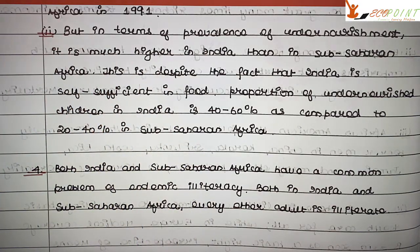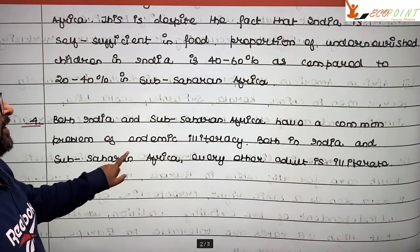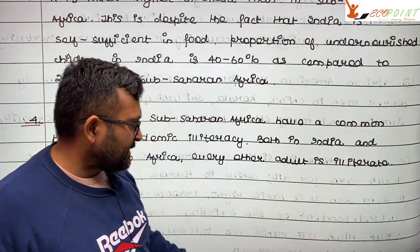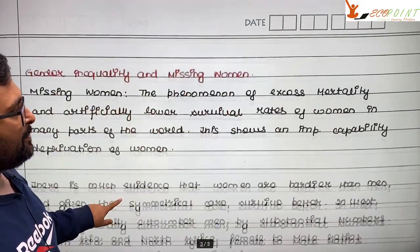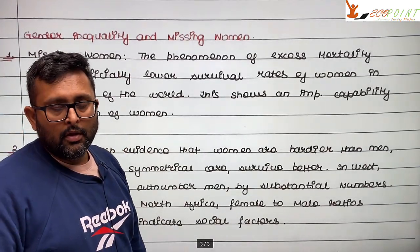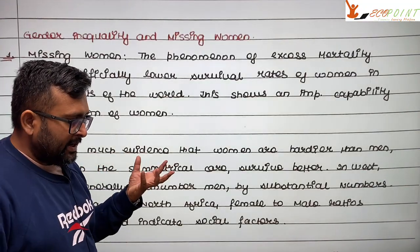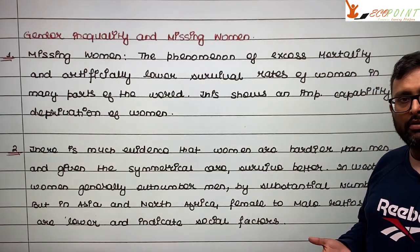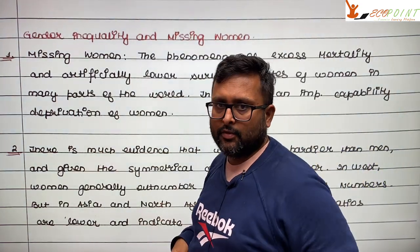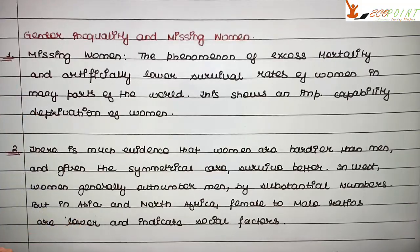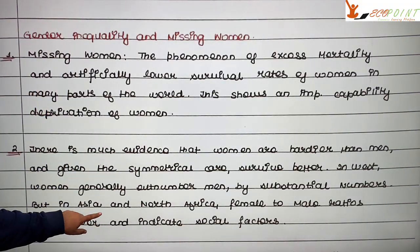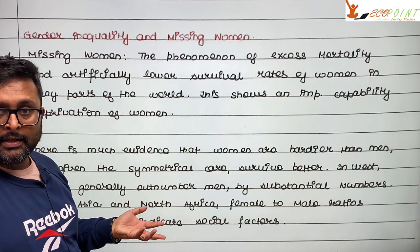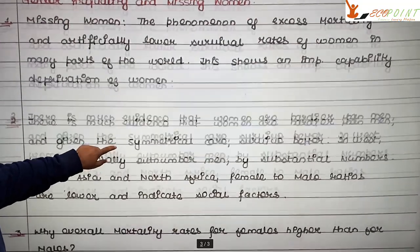There is also endemic illiteracy in both India and sub-Saharan Africa. Another capability deprivation is gender inequality. Sen discusses the phenomenon of missing women — an excess mortality of females and artificially lower survival rates for women in certain parts of the world. This represents an important capability deprivation.